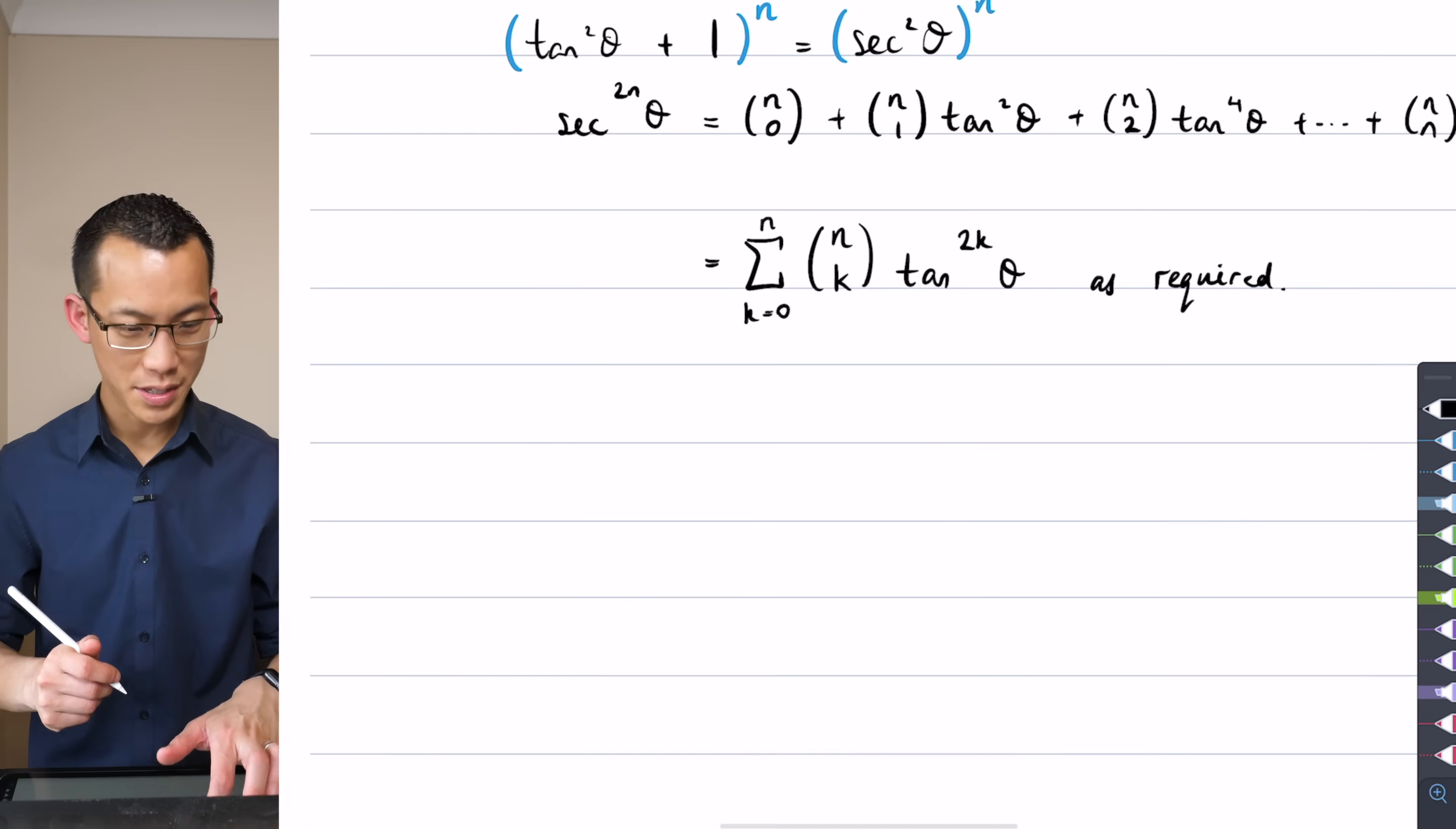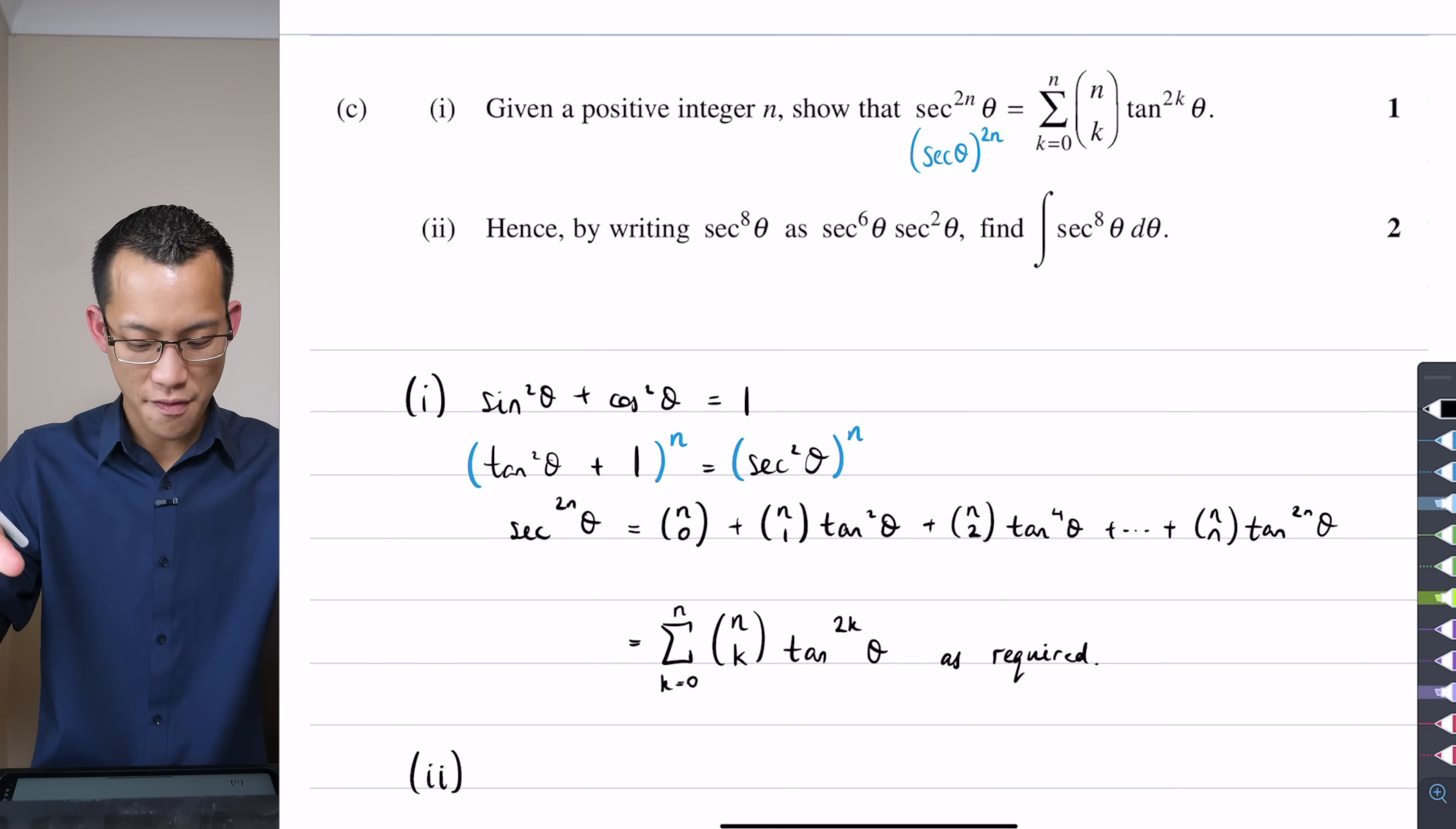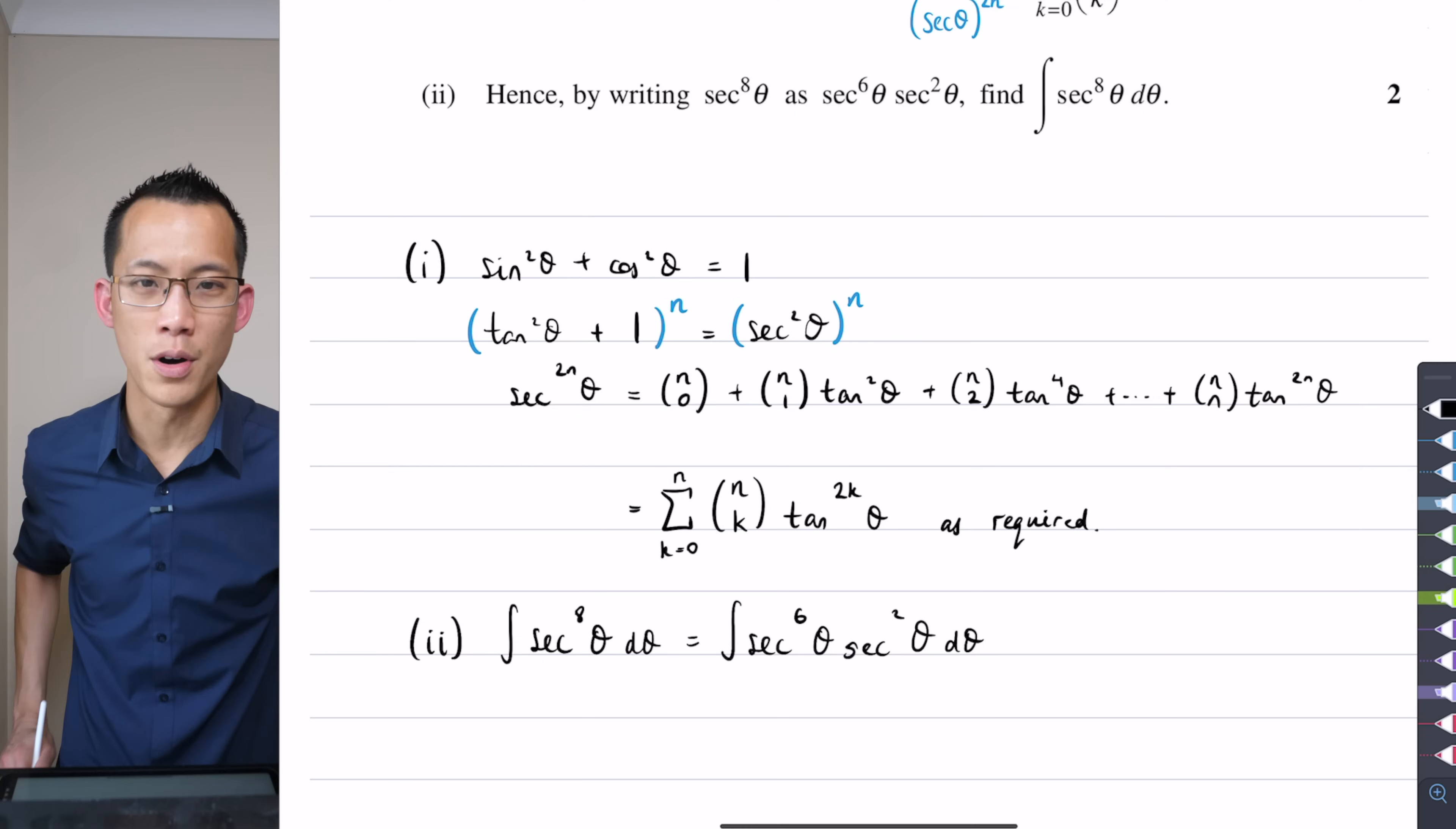Okay, happy times, how do we use this for part 2? Well, unfortunately, because it is a binomial expansion, things are going to get worse before they get better, but it won't be too bad. Okay, they've even told you, hence, by writing sec^8θ in this particular broken up fashion, find the integral of sec^8θ. So let's just go ahead and start off with their question, the integral of sec^8θ dθ. I'll just use their substitution that they've asked me to do, but I'm going to notice that there's a part of this that will be helpful to break up, and a part of it that will not.